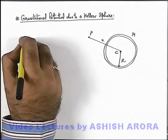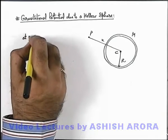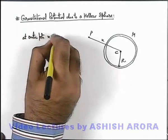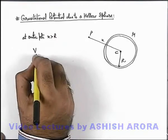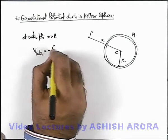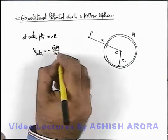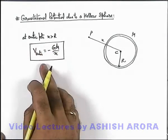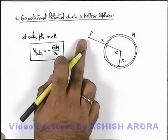So we can simply write at outer points where x is greater than R, potential at point P or potential at outer point can be written as simply minus GM/x. That is the result of gravitational potential of a point mass at a distance x from the mass.